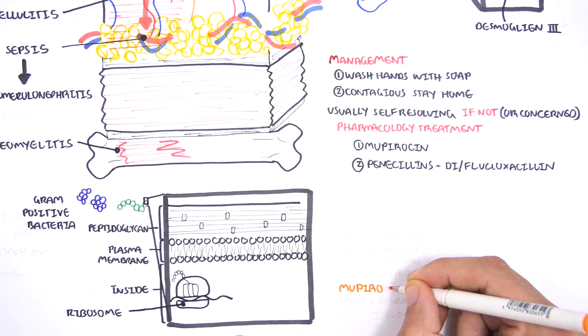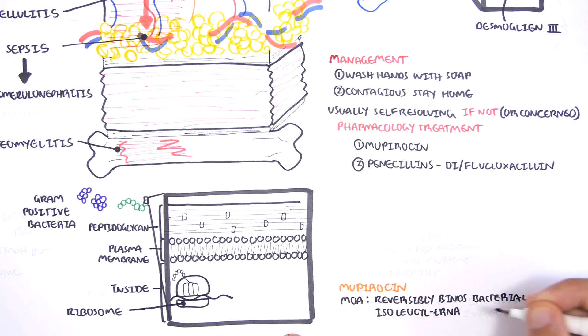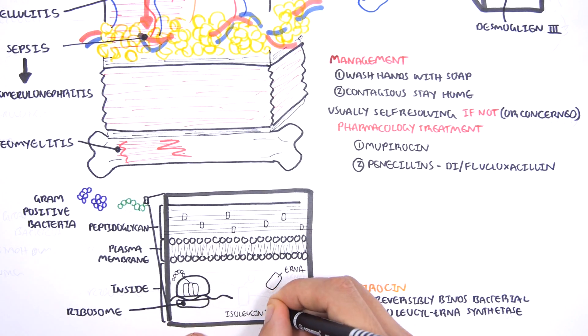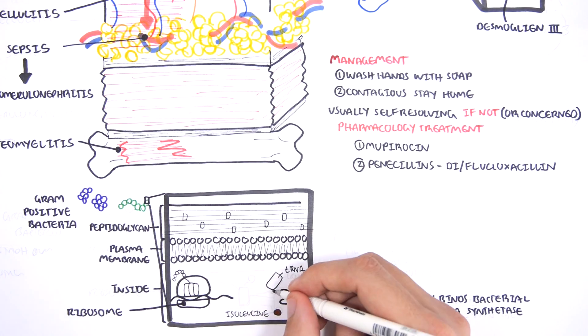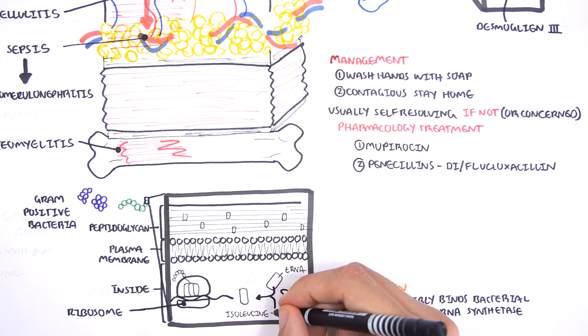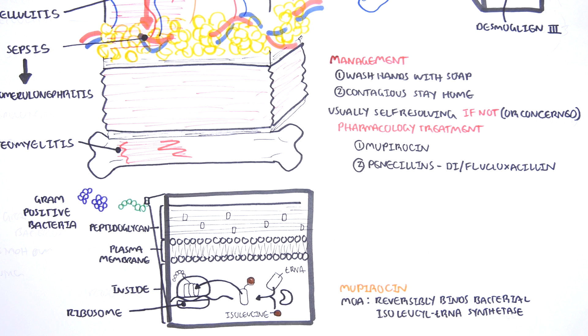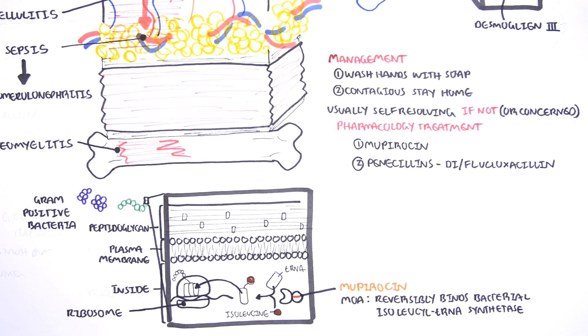Mupirocin works by reversibly inhibiting bacterial isoleucine tRNA synthetase. What does this mean? Well, tRNA is a protein which normally attaches to amino acids, such as, in this case, isoleucine. It can attach together with the help of an enzyme, in this case, isoleucine tRNA synthetase. Because of this, this new tRNA isoleucine complex can go to the ribosome and can essentially offload the amino acids to help the ribosome make proteins. Mupirocin inhibits this enzyme, tRNA isoleucine synthetase, and thus disrupts protein synthesis.